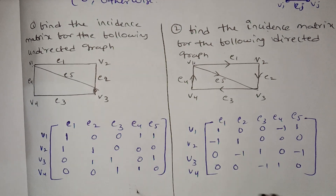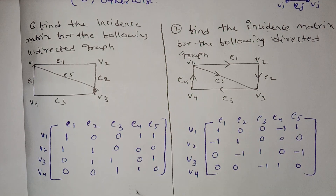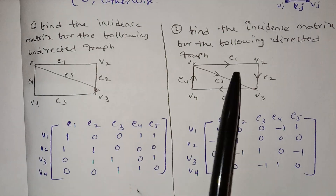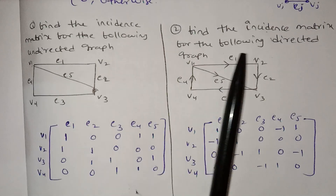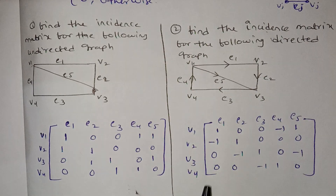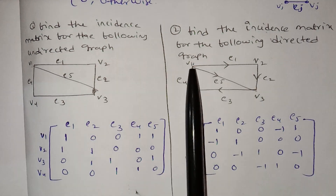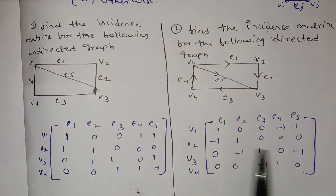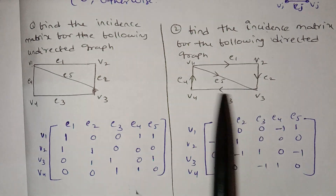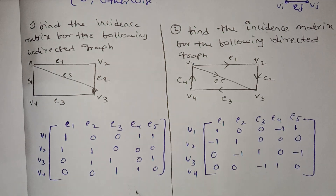Now let's go to the incidence matrix for a directed graph. Like the adjacency matrix, rows are vertices and columns are edges. Find the incidence matrix for the following directed graph. We have vertices V1, V2, V3, V4 as rows, and edges E1, E2, E3, E4, E5 as columns.